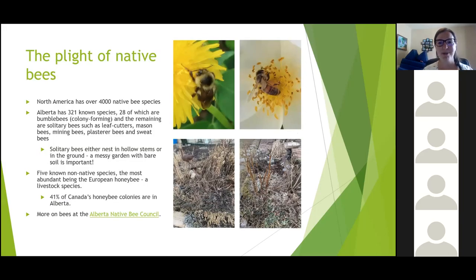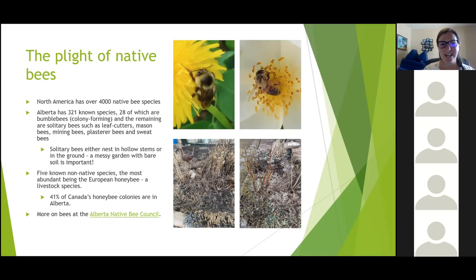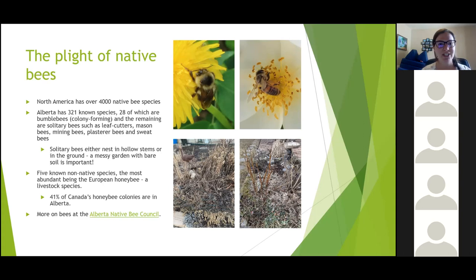Honing in on one particular pollinator — the native bees — a lot of people don't realize how many bees we have. North America has over 4,000 species of native bees. In Alberta, we have 321 known species, and I highlight 'known' because there are probably so many more we haven't discovered yet. We have bumblebees, which are colony-forming species, and we also have solitary bees — leafcutter, mason bees, mining bees, plaster bees, and sweat bees.